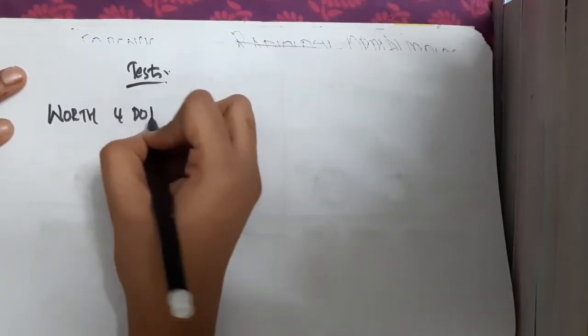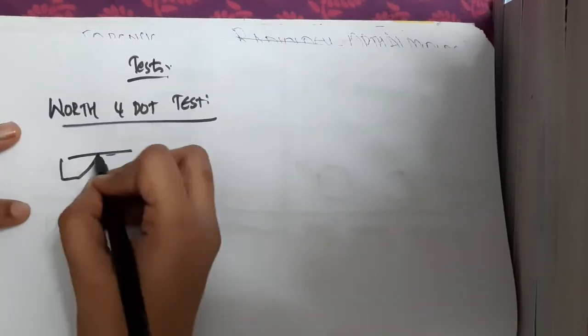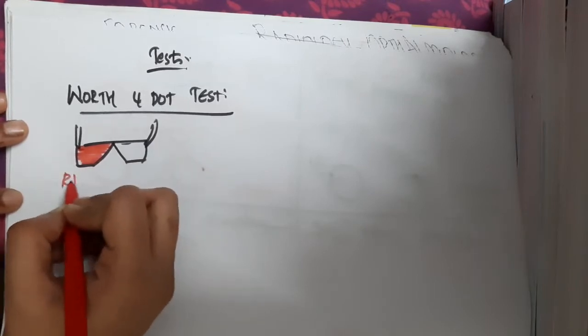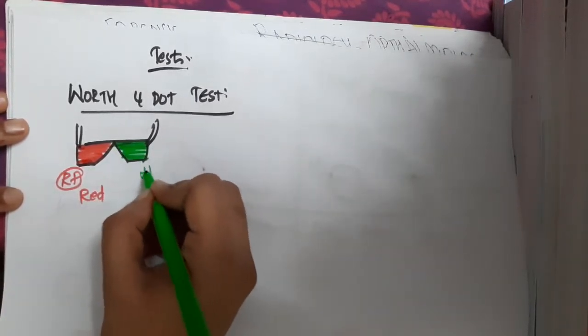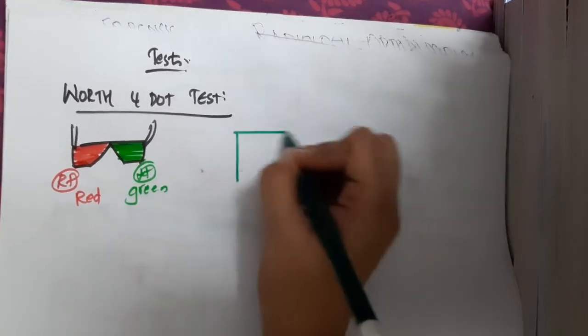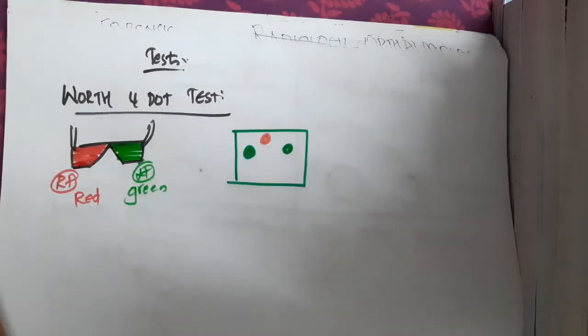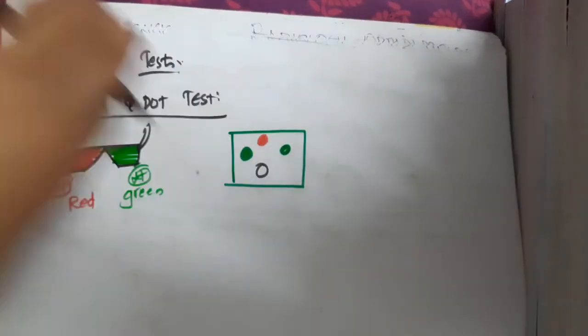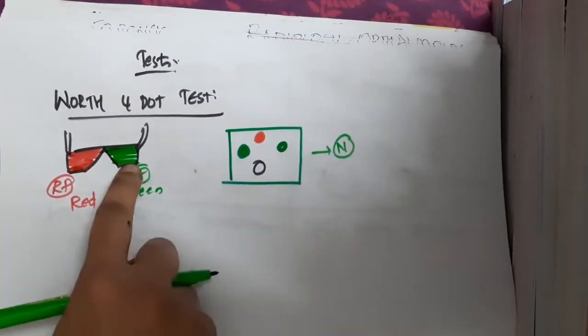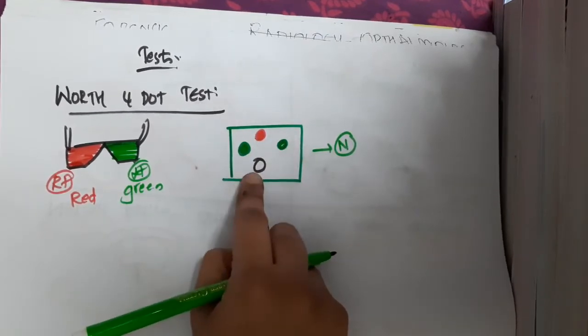What tests do we do for binocular vision? Number one is the Worth four dot test. The patient wears spectacles where the right eye has a red-colored film and the left eye has a green-colored film. With these glasses, the patient looks at an image containing two green dots, one red dot, and one white dot. If the patient perceives one red dot, two green dots, and one white dot, then it is normal.